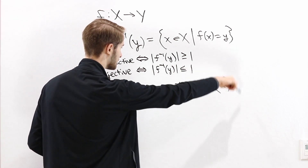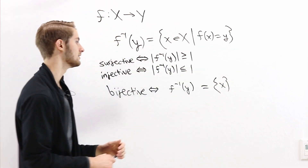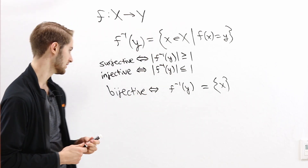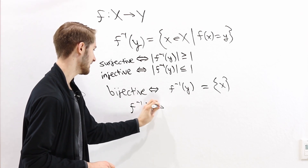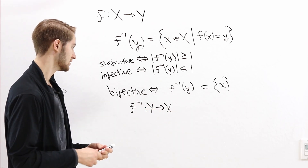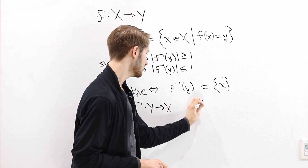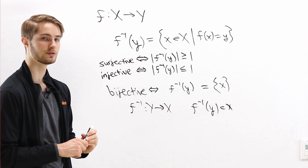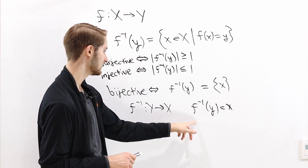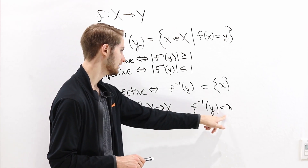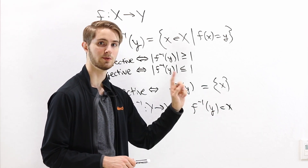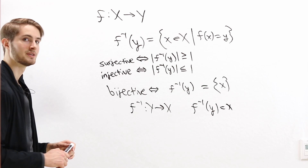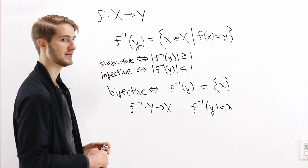Given that we have this preimage — this one input from the domain for each output in the codomain — we can use this to define a function f inverse from Y to X. We define the inverse function by saying that f inverse of y is just that one element of the preimage. Since each preimage has exactly one element, we take f inverse of y to be that unique element.